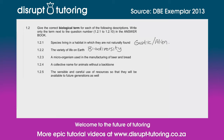1.2.3 — a microorganism used in the manufacturing of beer and bread. That is typically known as yeast, which is a fungus. So we can say fungus, and it is yeast.